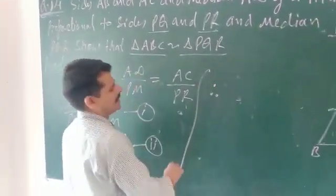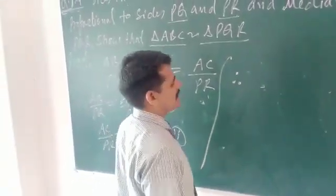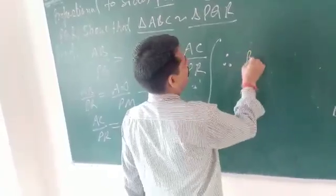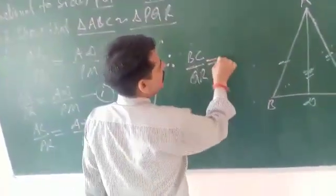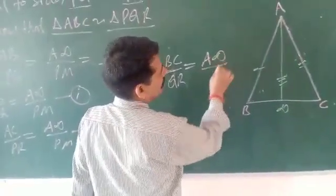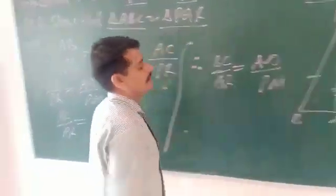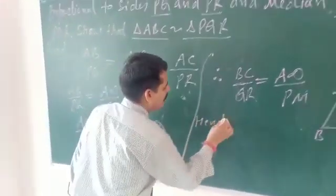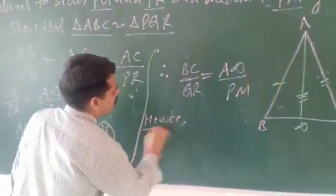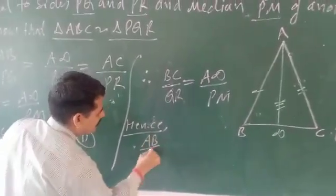The median ratio, so therefore, hence, this one AB upon PQ